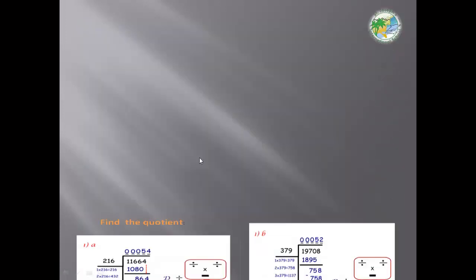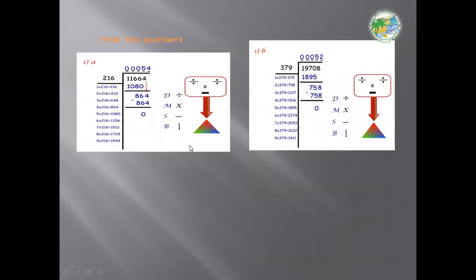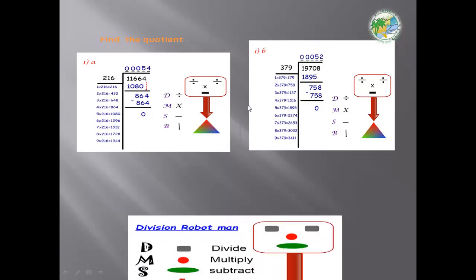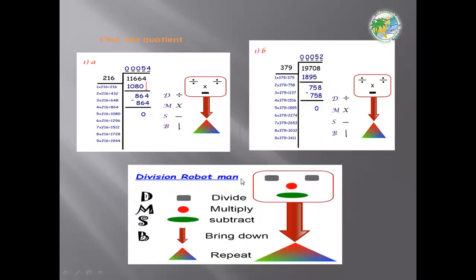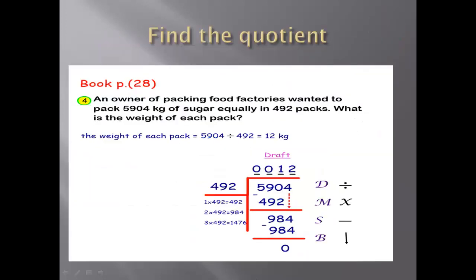Compare between the two last questions. The same steps. The first and important step should be writing the draft of divisor. Here also write the draft of divisors and do the steps of division. This is called robot man: divide, multiply, subtract, bring it down, and repeat them.